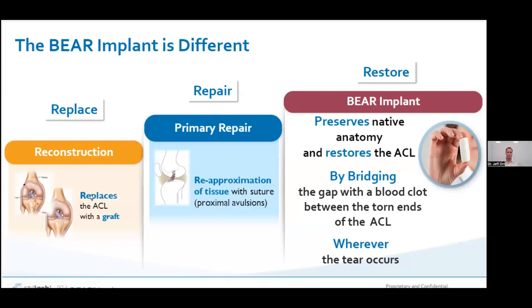Another way to help ACL repairs is the BEAR implant — Bridge Enhanced ACL Repair. You make a bridge, which is a large piece of sponge that you fill with highly specialized concentrated blood. That will help bridge and create a scaffold for your ACL not only to heal but also to grow. It's only a few years old — long-term studies are still coming out. But this is another option. If you have enough residual ACL from the tear, we can do a repair and put this BEAR implant in to augment and improve the repair.